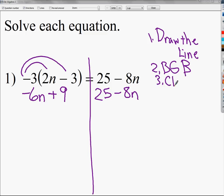Then I'm going to look for my Clean Your Room. Clean My Room is where I combine like terms on the same side of the equal sign. There aren't any. Negative 6n plus 9. Negative 6n and 9 are not like terms. On the other side, the 25 and the negative 8n are not like terms either. I have 1 with a variable and 1 without on both sides, so we're not going to combine any terms on the same side.